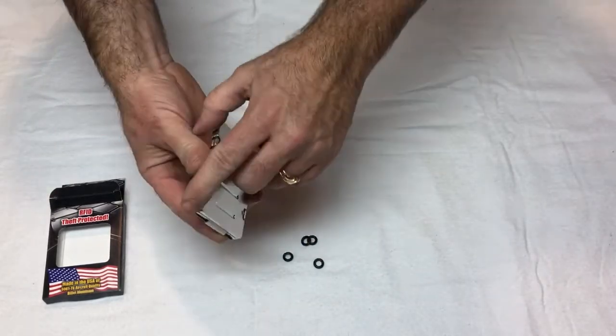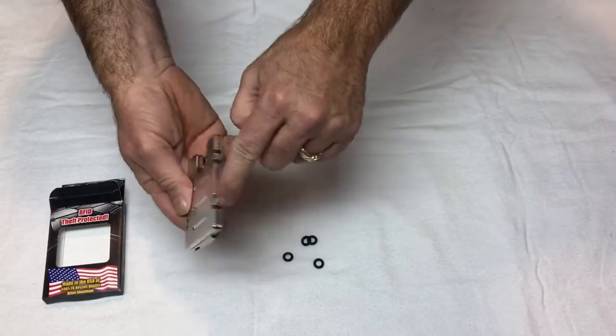If you break an o-ring, the o-rings are on the sides here. You just take the screw off and you can replace an o-ring.